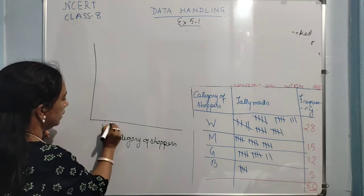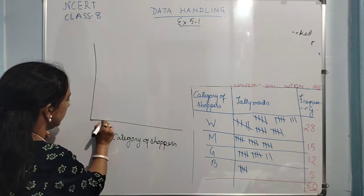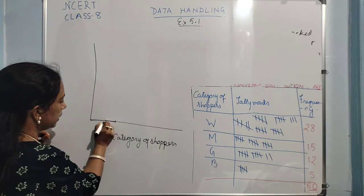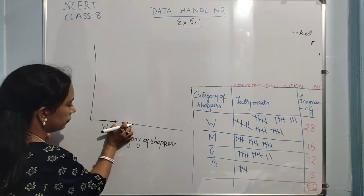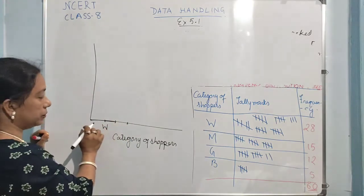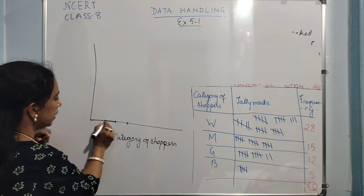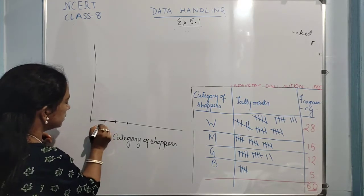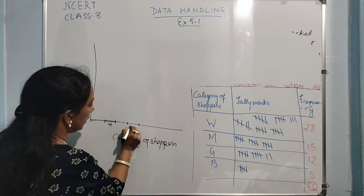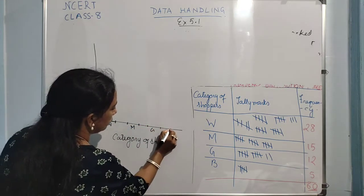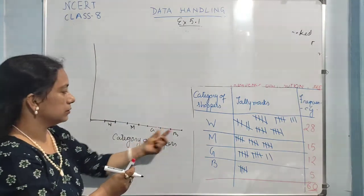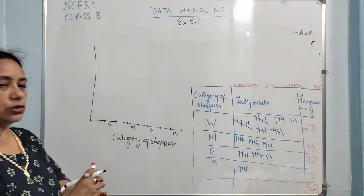The first bar will be for women. You have to maintain equal gap — if you are taking 5 small squares as the width, then the gap between bars also has to be 5. So I am taking all 5-unit widths. I am considering W for women, then M for men, then G for girls, then B for boys. I have taken the width to be 5 and the gap between them also 5 units — in terms of small squares on your graph paper.